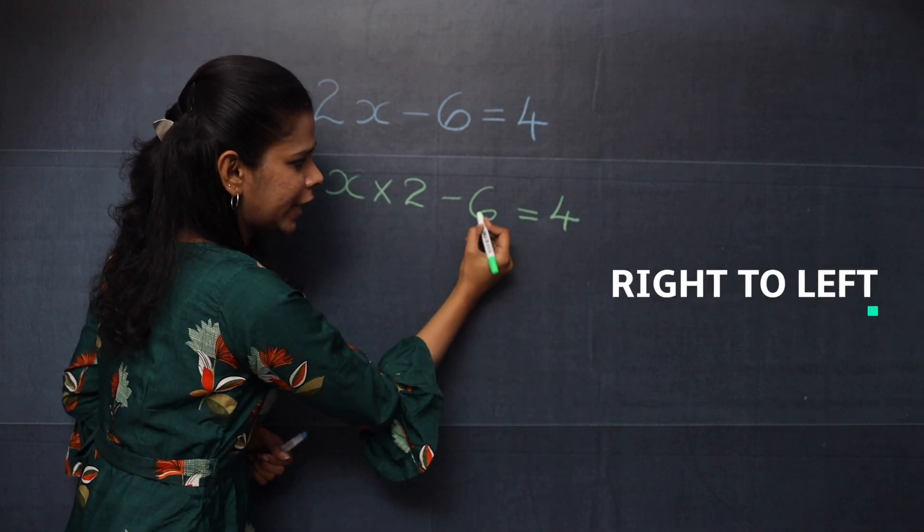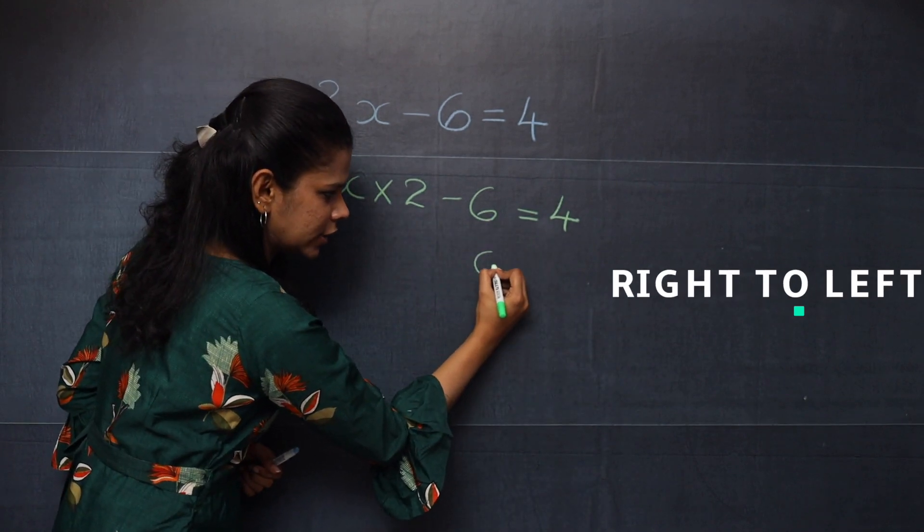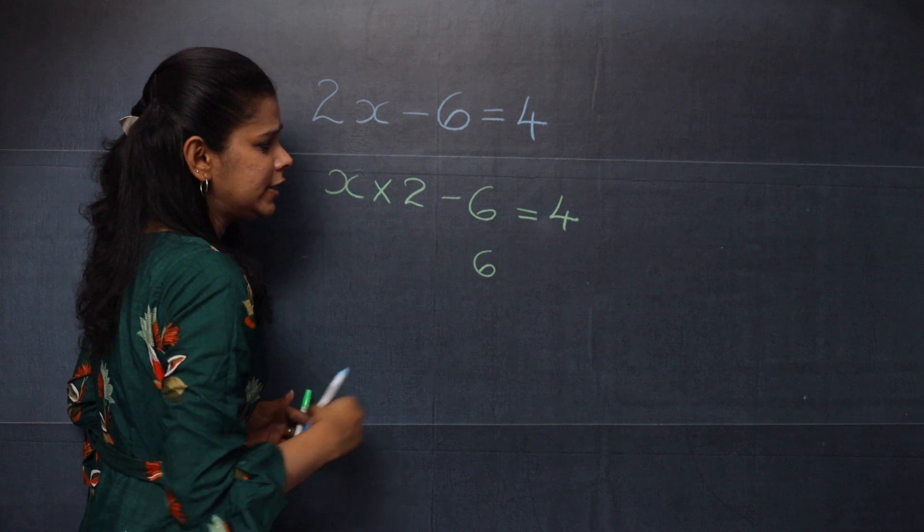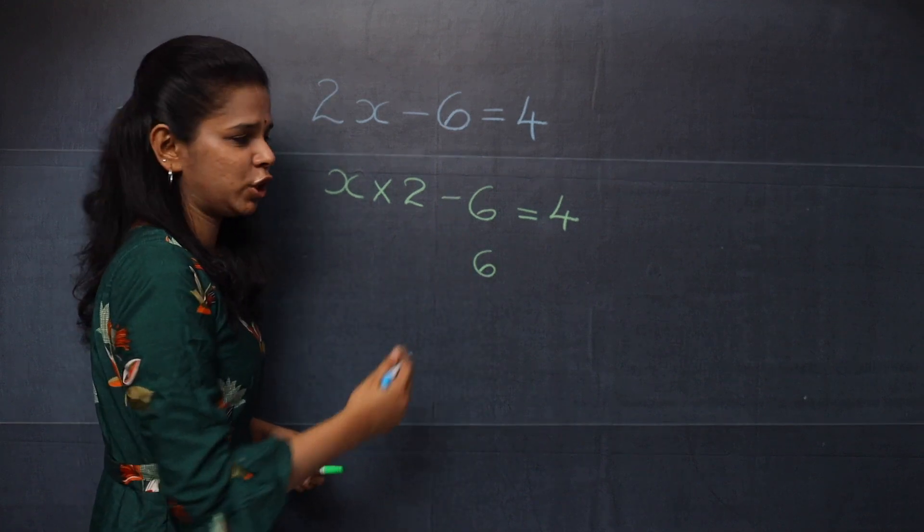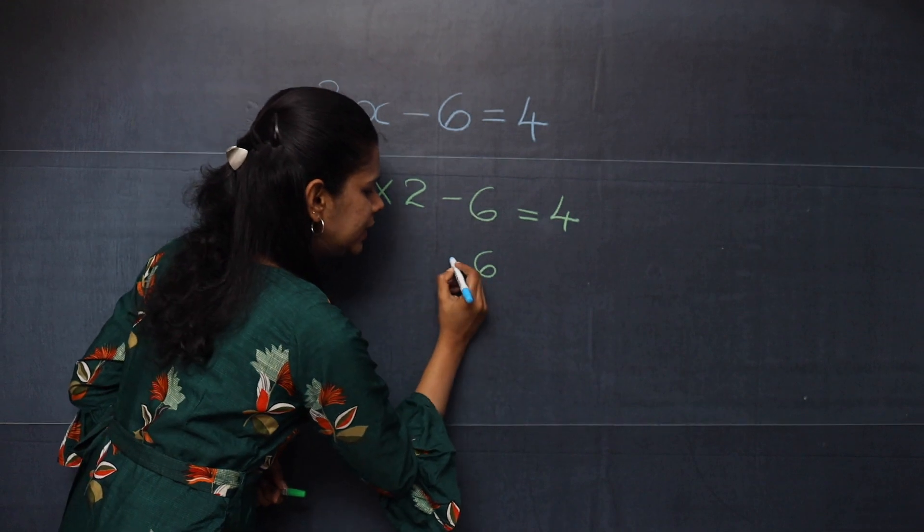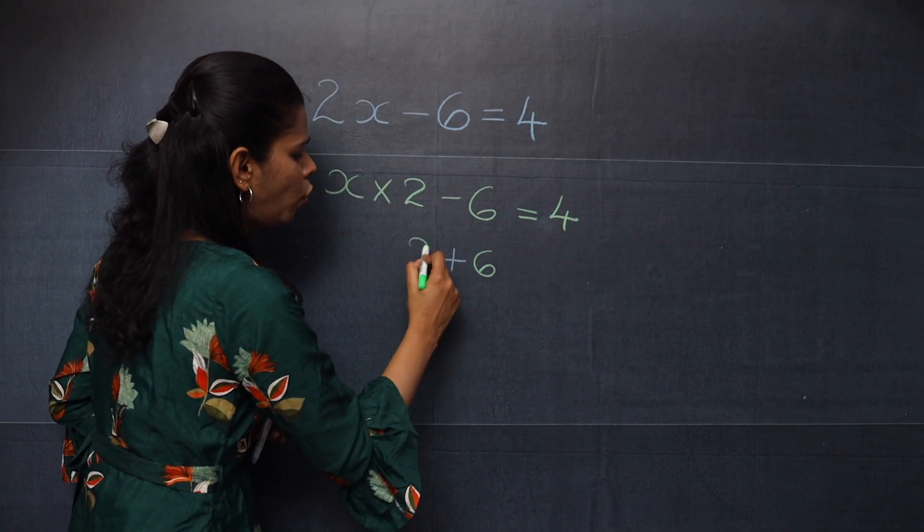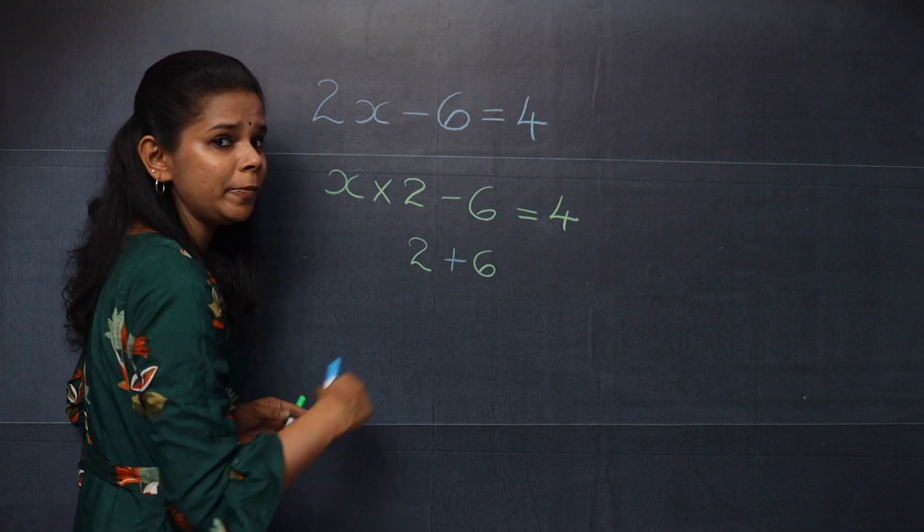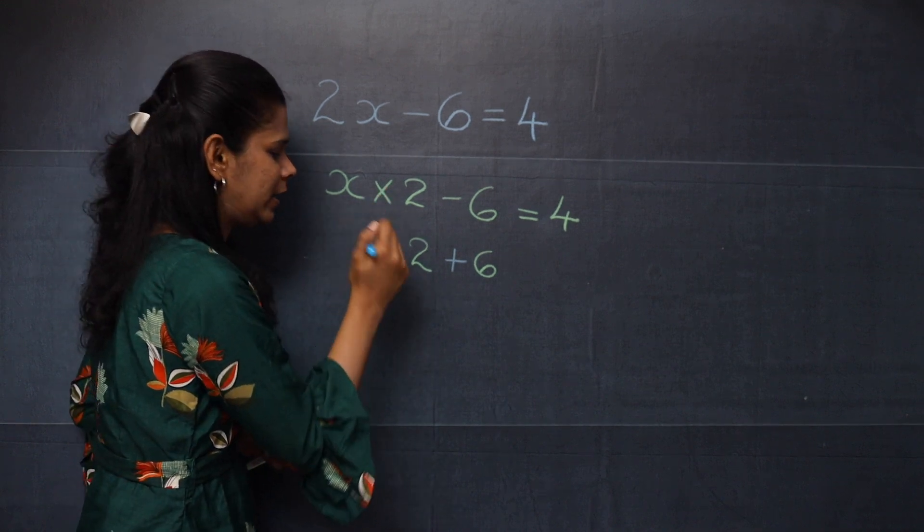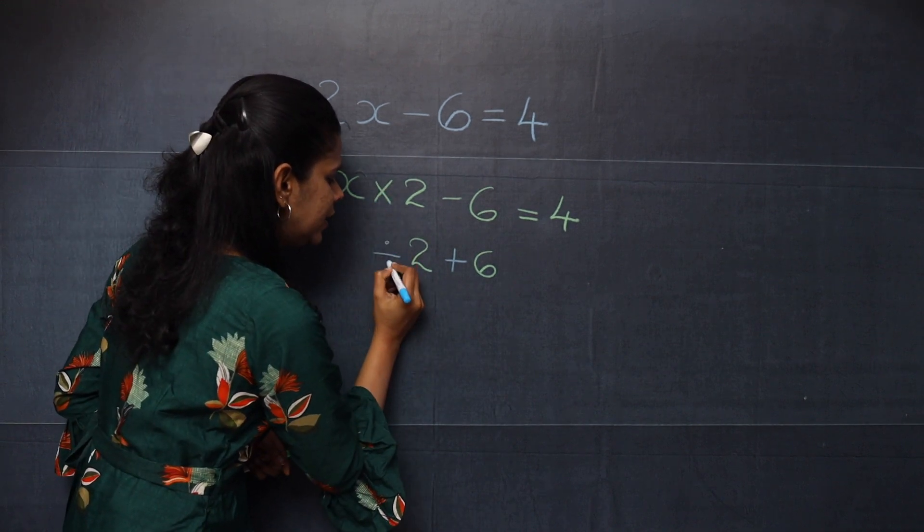So from this side you can see you have 6 here. And then instead of minus you will use the inverse operation of subtraction, and that is addition. After that you have 2 and then you will use the inverse operation of multiplication and that is division.